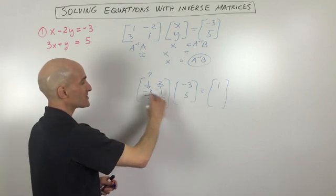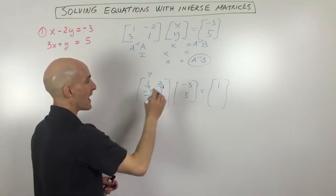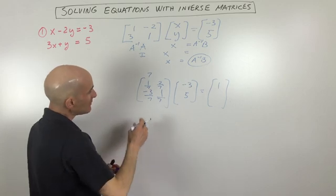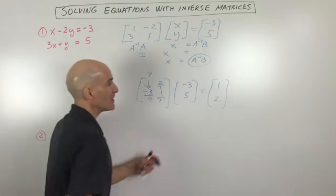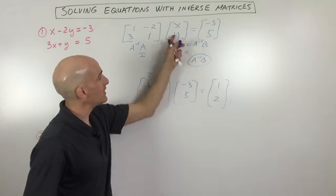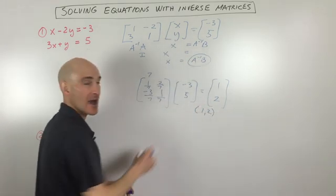And if you do, for this one, the second row, first column, we get 9 sevenths plus 5 sevenths is 14 sevenths, which is 2. So you can see that X is 1 and Y is 2. We can write our final answer as a coordinate, 1 comma 2.